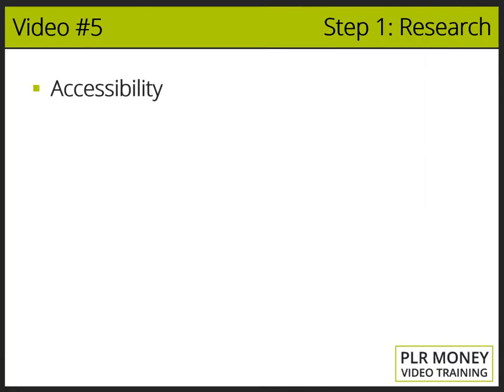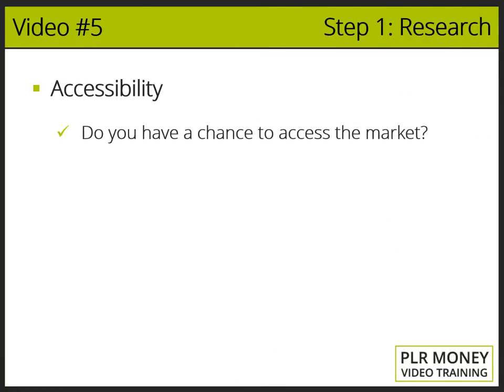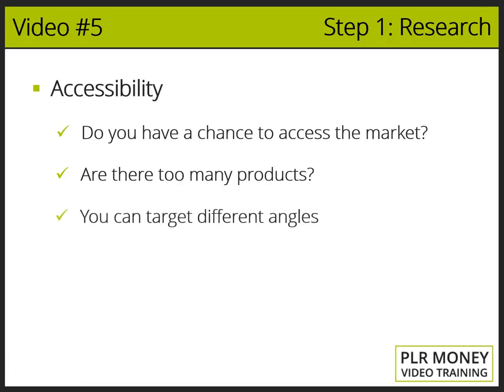For accessibility, we mean if you have a chance to access that niche with your product. We just need to look to see if there are too many products related to the topic we're trying to market. It's not a good idea to launch the same thing all the time, but you can even determine what angle you can target on that same hot topic already identified as highly demanded and highly commercial.